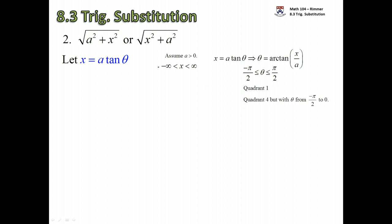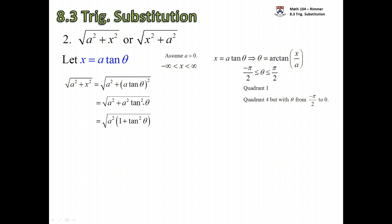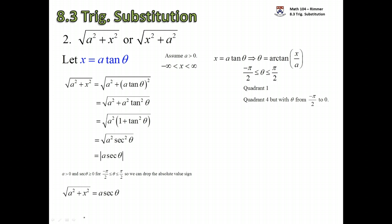Now let's see what happens to the root of a squared plus x squared. Plugging in x = a·tan(θ) and squaring gives a squared plus a squared tan squared under the root. Factor out a squared and we're left with one plus tan squared, which equals secant squared — a perfect square. Taking the root removes it. Technically we have absolute value here, but since a is positive and we're in the first and fourth quadrant where cosine is positive, secant is also positive there, so we can drop the absolute value and replace the root with a·sec(θ).